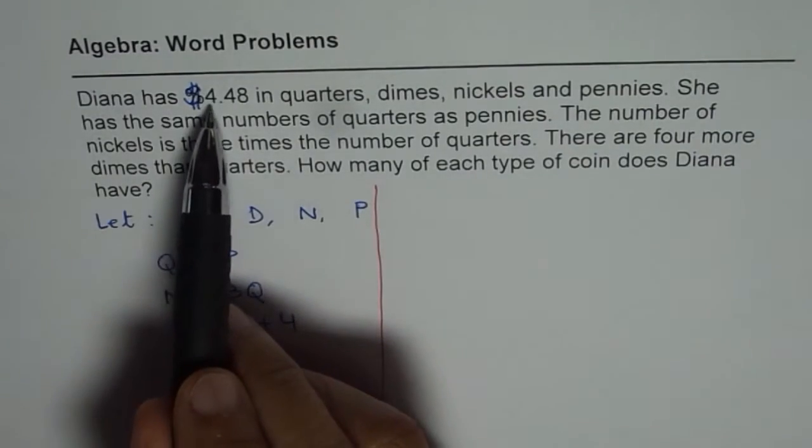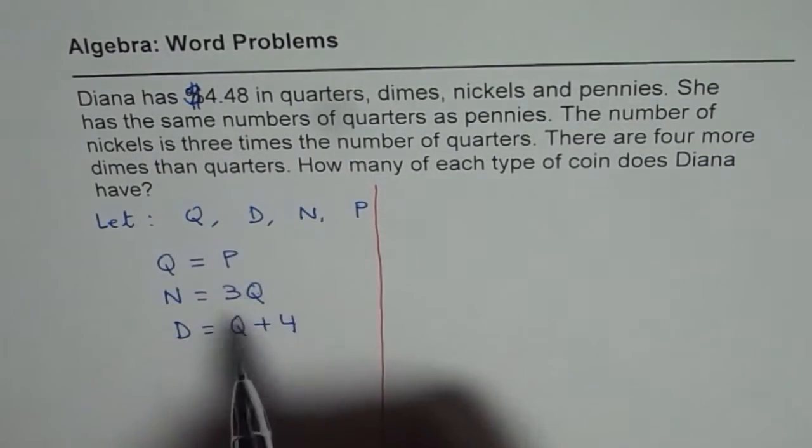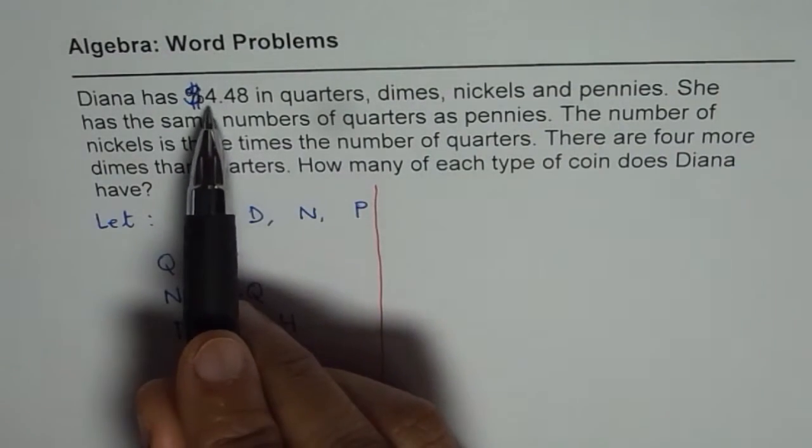Total value is $4.48. So value means what? That means if we add these number of quarters, dimes and nickels, we should get $4.48.